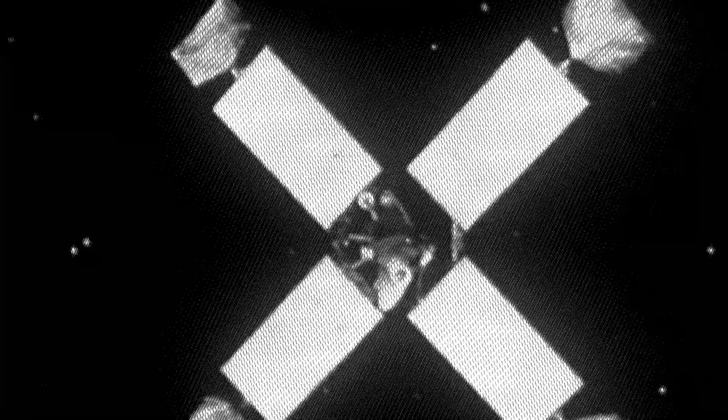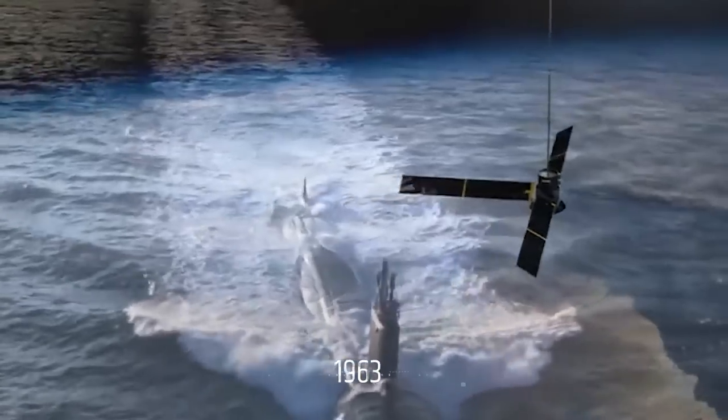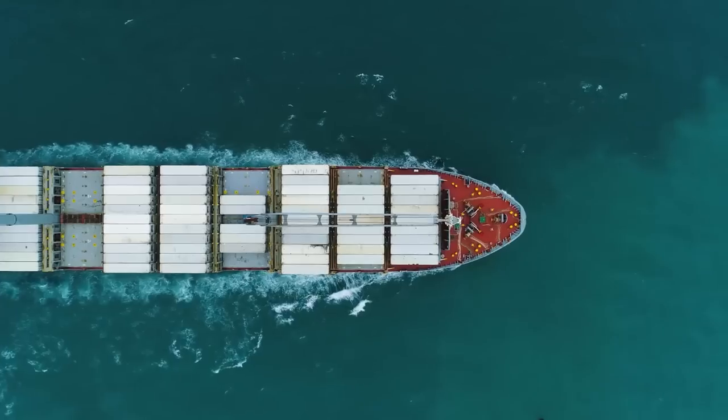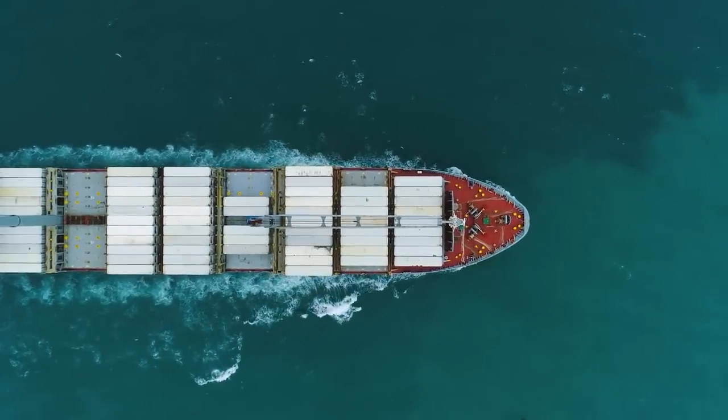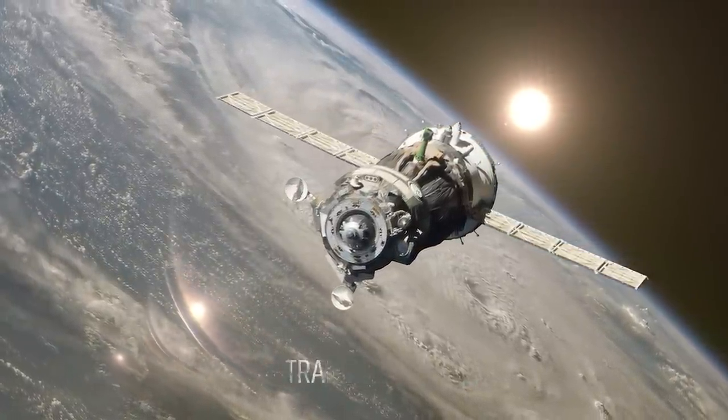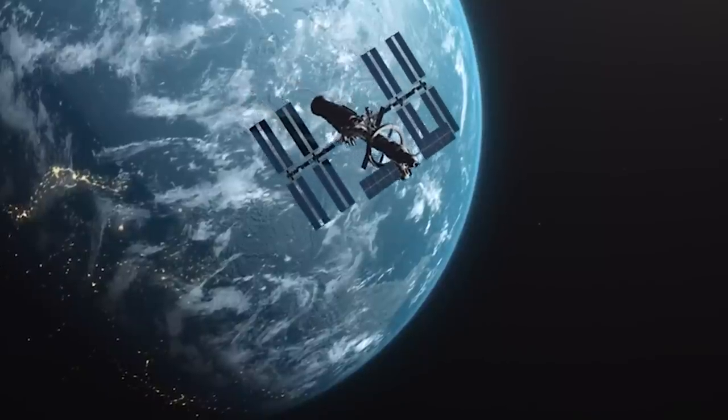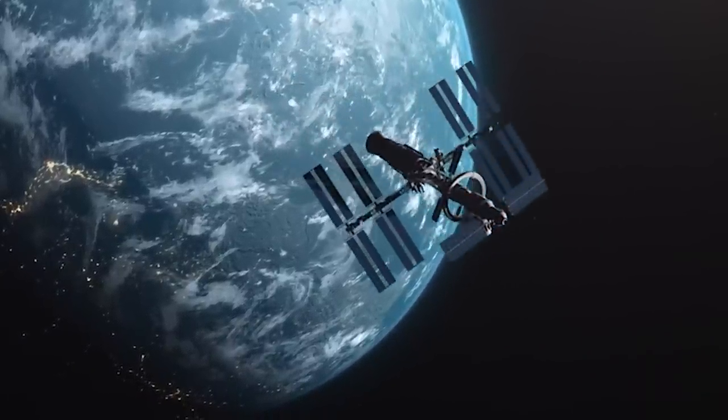Transit 5B5 was a navigation satellite launched by the US Navy in 1963. It was designed to detect and locate the position of ships at sea. Transit 5B5 is now a zombie satellite as it has been dead for decades, but it still orbits the Earth every 94 minutes, posing a risk to other satellites in orbit.